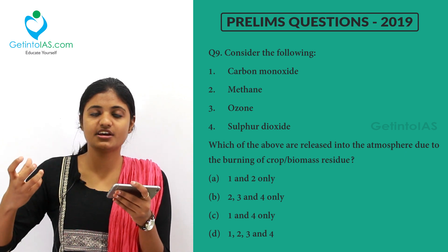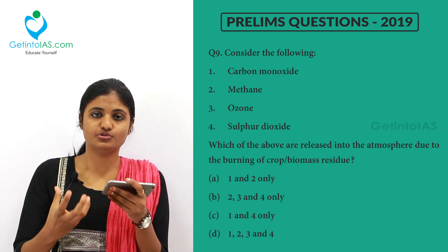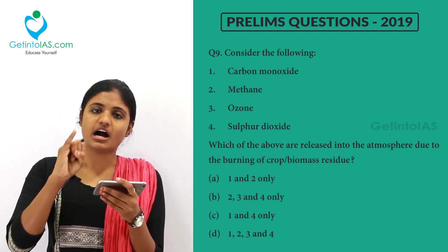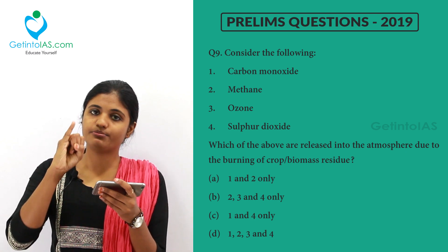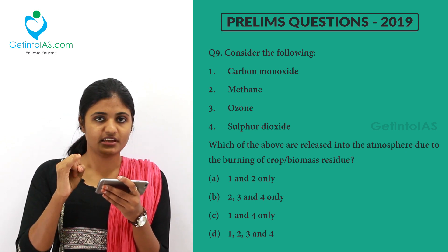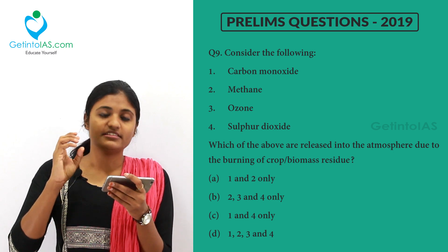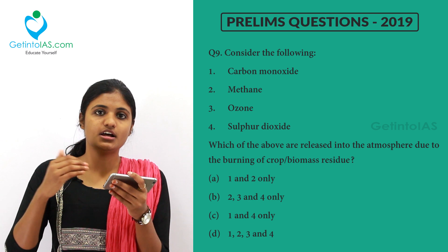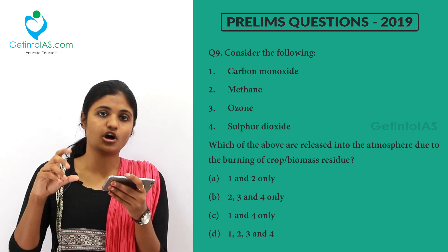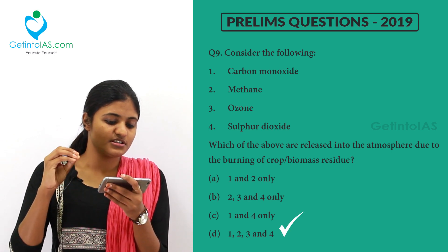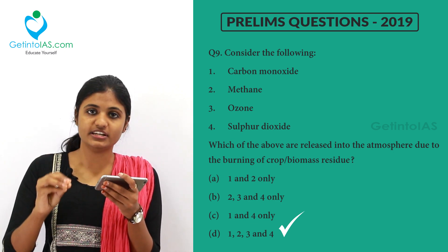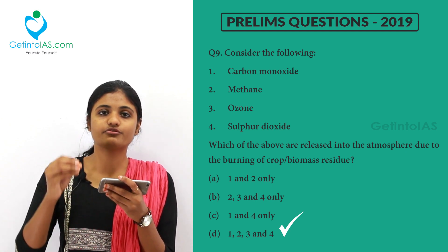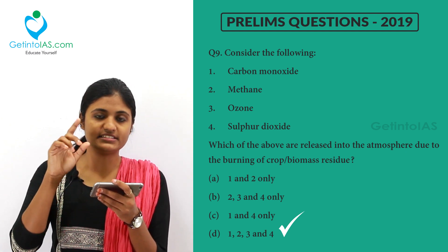What does burning the crop residue — the leftovers after harvesting — release? First, it produces carbon monoxide — definitely true. Methane is also released. Third, ozone is also correct — due to photochemical smog in the lower part of the atmosphere, the troposphere. Fourth, sulfur dioxide is also released due to burning of crop residue. So all these gases are released, and option D is the correct answer.